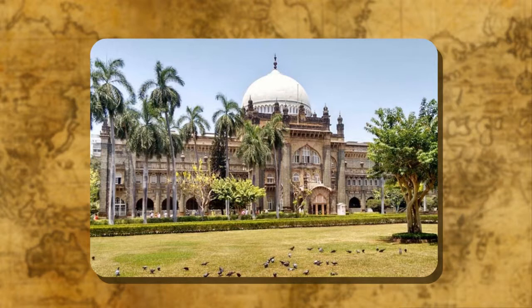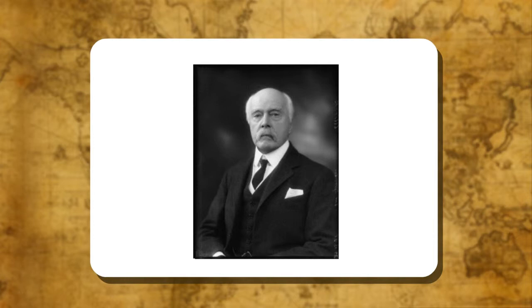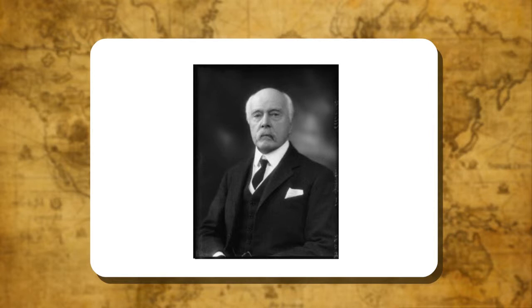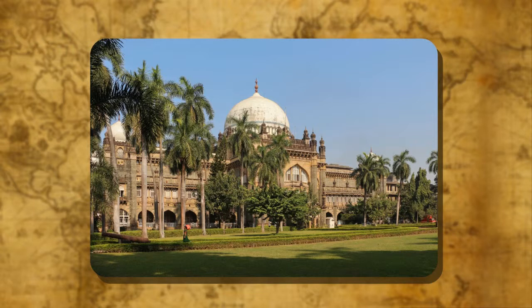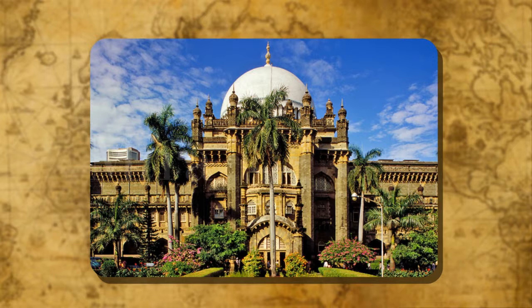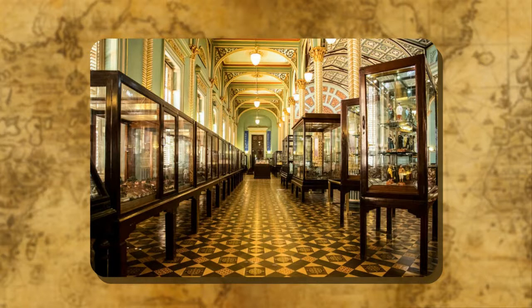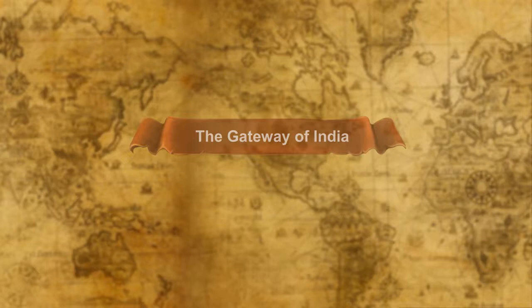The Prince of Wales Museum, now called Chhatrapati Shivaji Maharaj Vastu Sangrahalaya, is located in the heart of South Bombay, near the Gateway of India. George Wittet, one of the great architects and engineers of his time, was commissioned to design the building in 1909; it was completed in 1915. The architecture of the museum is a combination of several architectural elements. The main building is three stories high, capped by a dome which very much resembles the dome of the Taj Mahal at Agra. The museum houses rare and ancient exhibits of Indian history as well as objects from foreign lands.